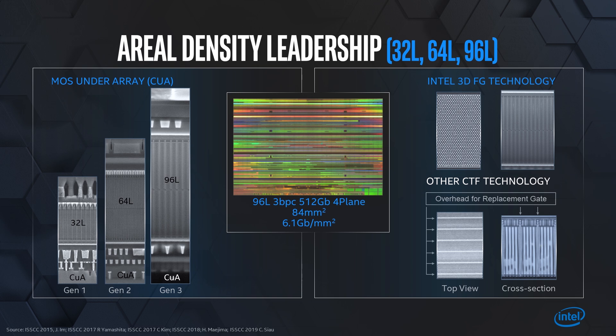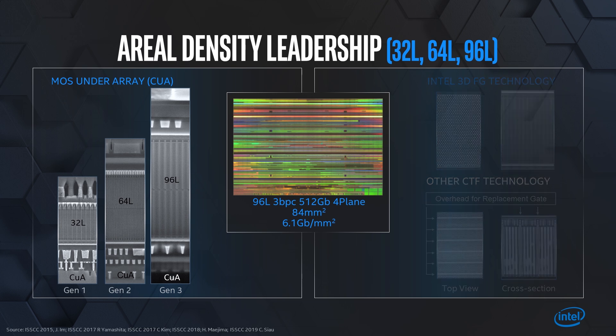There are two basic things under this. The first one on the left-hand side is CMOS under array, where we are actually building the entire parking lot below the entire skyscraper. So there is no wasted area, and what does that give you? That gives you aerial density.